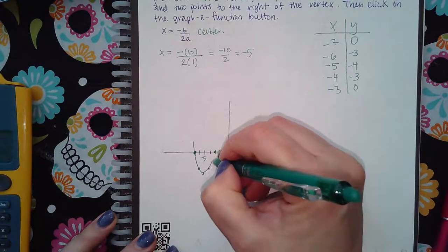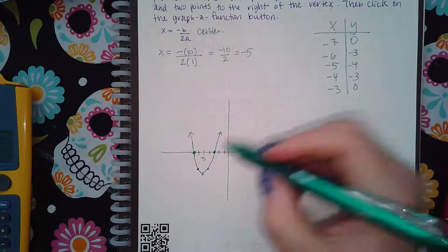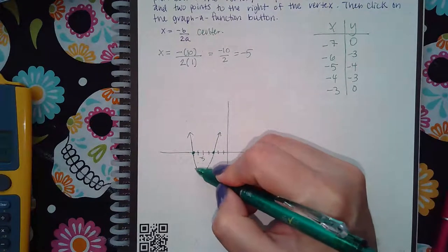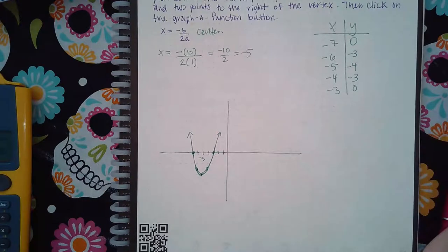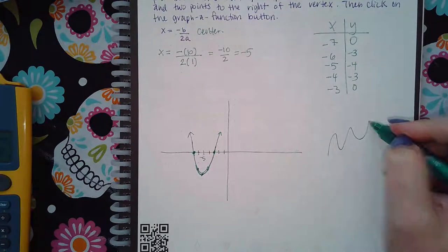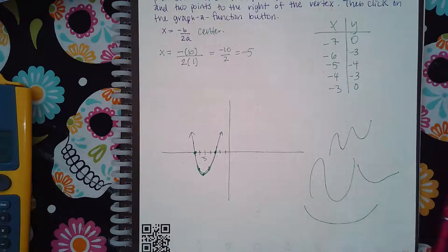And so then you click on that draw button and it will draw the parabola for you. If the graph does not look like a parabola after you've plotted your five points, be sure that your five points are correct.